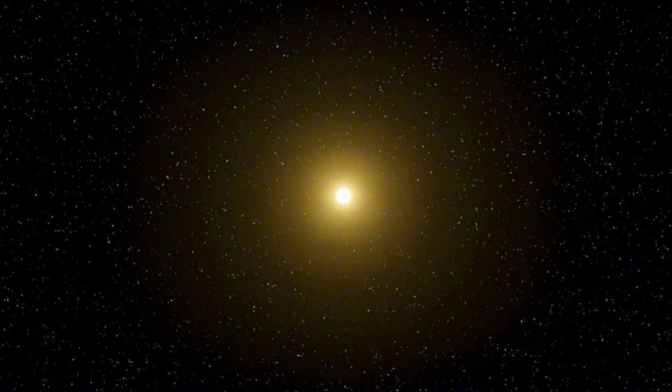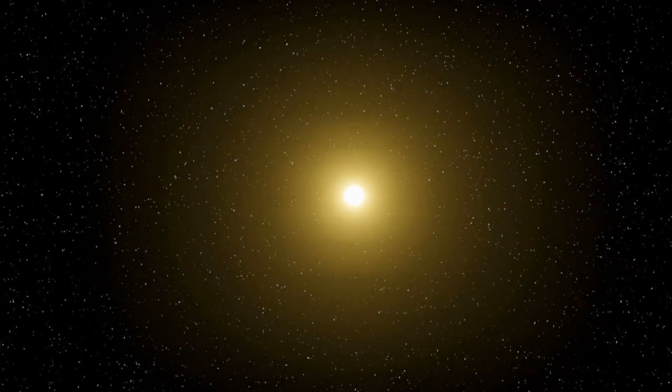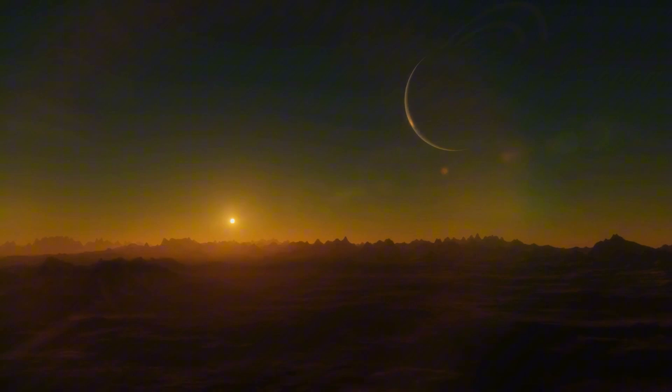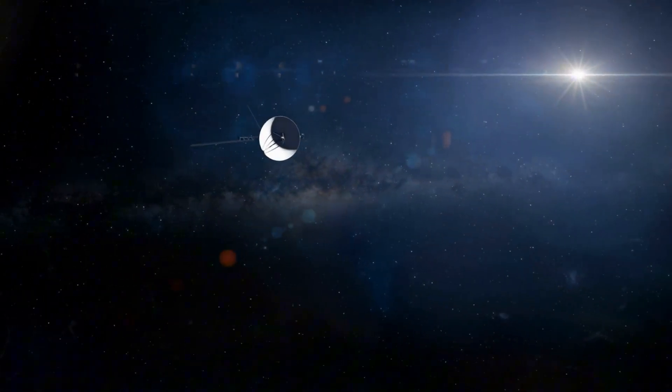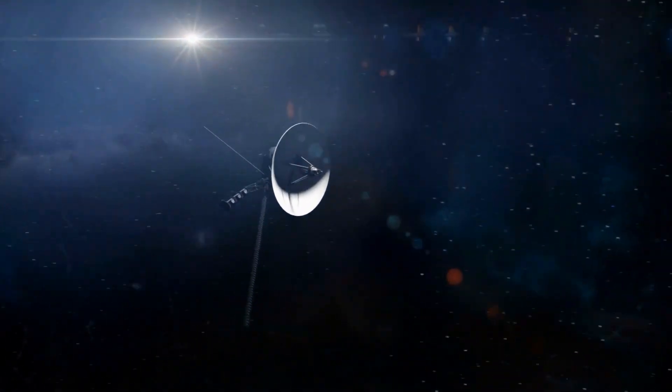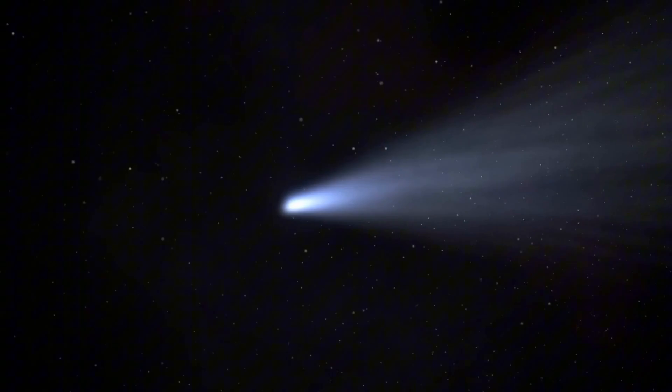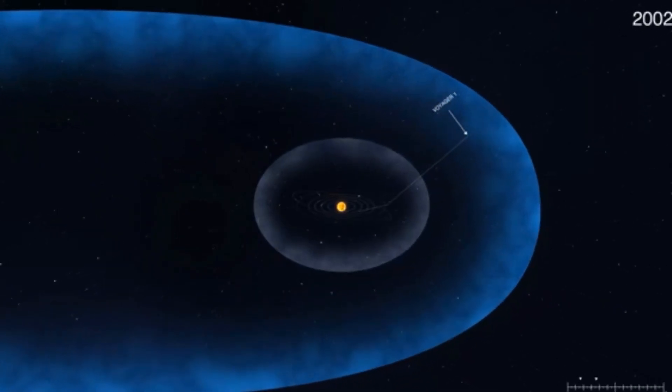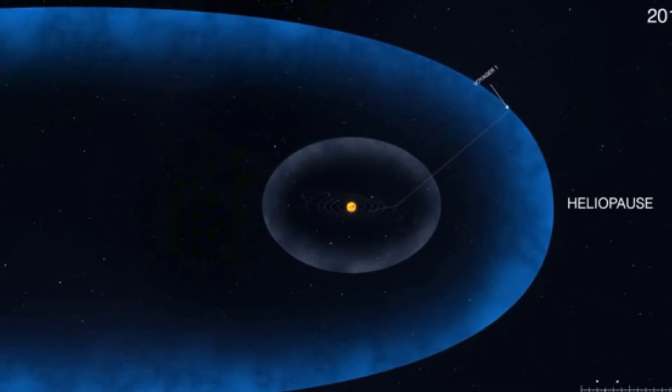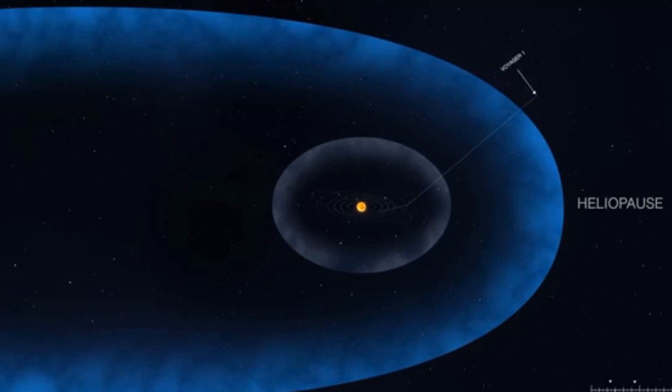Beyond our solar system lies the enigmatic Oort cloud, a vast assembly of comet-like objects bound by the Sun's gravity, extending toward the nearest star. While the Voyagers are gradually approaching this distant realm, their entry into interstellar space was marked by crossing the heliopause, the boundary between our solar system and interstellar space.